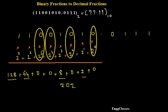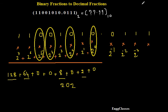For the fractional part, instead of positive powers, I'll use negative powers of 2. The first fractional digit is 0, and I'll multiply it with 2 to the power minus 1. The next digit is 1, multiplied with 2 to the power minus 2. The next digit with 2 to the power minus 3, and the last digit with 2 to the power minus 4. Then I just need to sum all of these up.